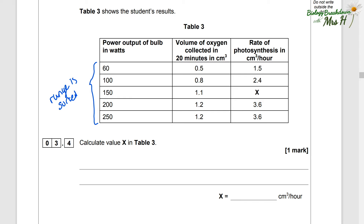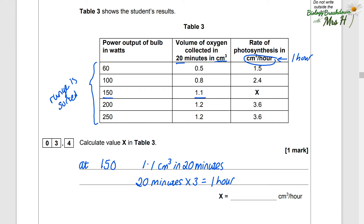Table three shows the student's results. We've got power output of bulb in watts, volume of oxygen collected in 20 minutes in centimetres cubed, and the rate converted into centimetres cubed per hour. Calculate value X in table three. At 150 watts power output, there's 1.1 centimetres cubed of oxygen collected in 20 minutes. We need to multiply by three to convert to per hour, so 1.1 times 3 gives us 3.3 centimetres cubed per hour.